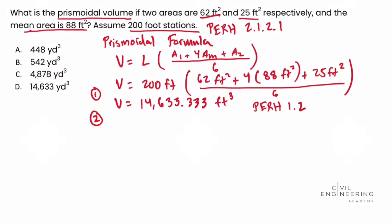So we'll take the volume we found above as 14,633.33 cubic feet and we know that 1 yard is equal to 3 feet. That's our conversion factor that we got from section 1.2. But we need to cube that quantity because it's dealing with cubic feet.